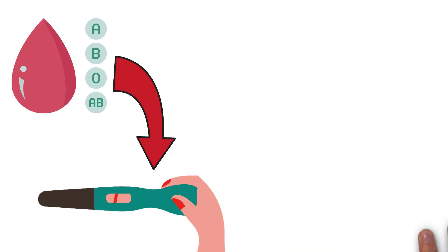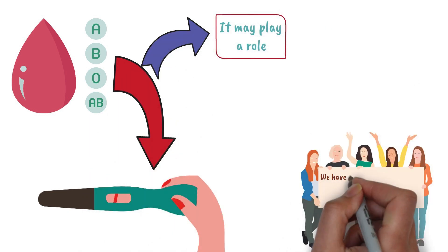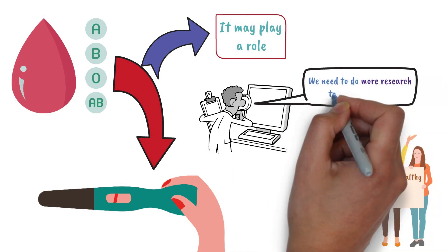Number ten, fertility. Your blood type can't predict whether you will get pregnant, but it may play a role. In one study, women with lower numbers of healthy eggs were more likely to have type O blood than any other type. More research is needed to figure out why.